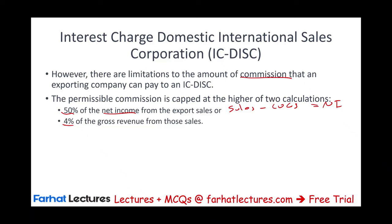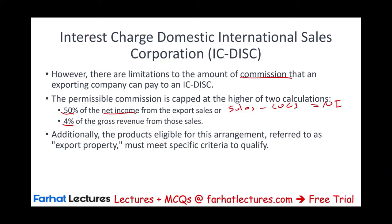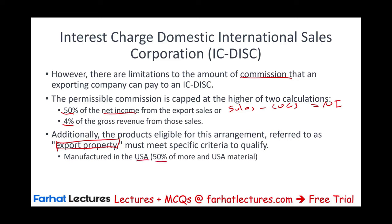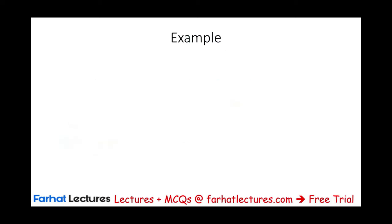Additionally, the product has to be eligible for this arrangement, referred to as export property, and must meet certain criteria to qualify. Per IRS rules, the product must be manufactured in the U.S. — at least 50% of it using U.S. materials. The whole purpose of this tax incentive is to encourage U.S. business activity.